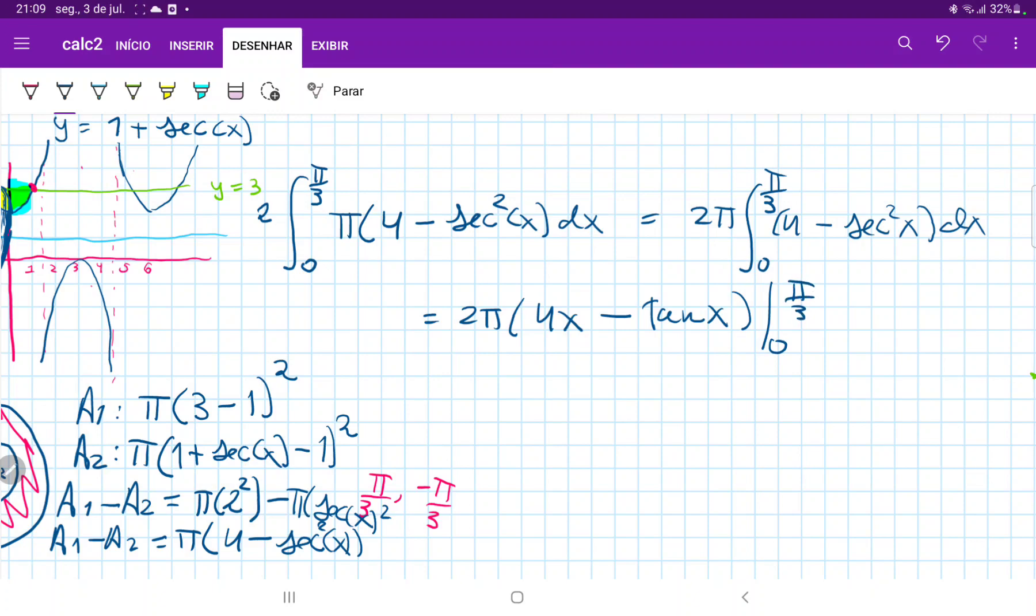So basically we just plug in these values. So we have 2 pi times 4 pi over 3 minus the tangent at pi over 3. Let's see. The tangent is sine over cosine. So that's square root of 3 over 2 divided by the cosine 1 half. So that's minus root 3.